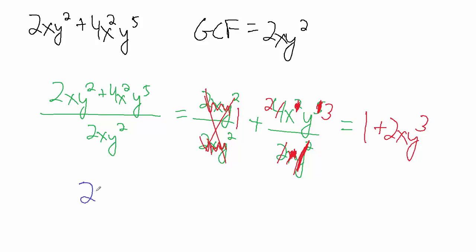So the way we write that as something that's factored is 2xy squared plus 4x squared y to the fifth equals our greatest common factor multiplied by what's left over when we divide, which is this. Or in other words, the quotient we get when we divide: 1 plus 2xy cubed.